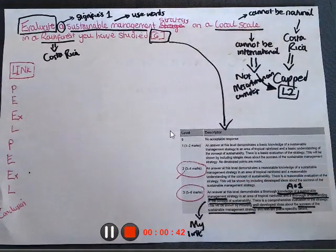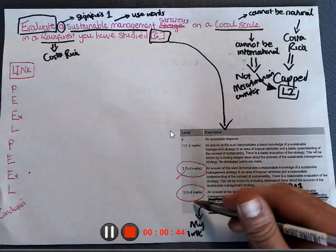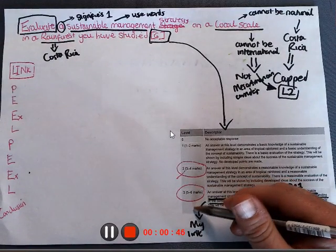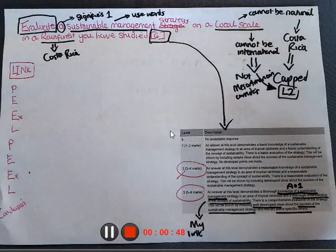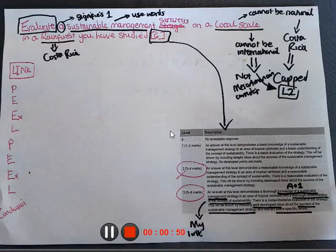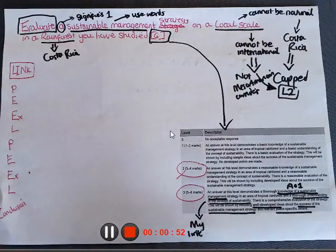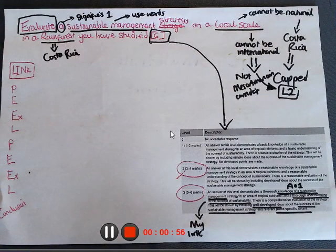But most of you should be going to seven to nine, which is level three, five or six marks. So it's only a six mark question. So whenever it is a six mark question, you will always do two peel paragraphs here.